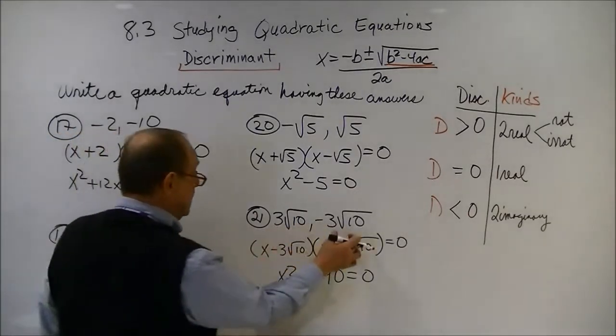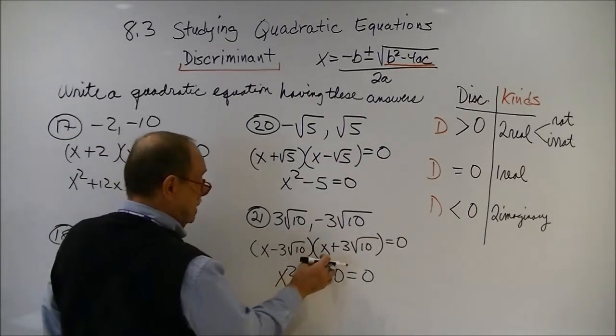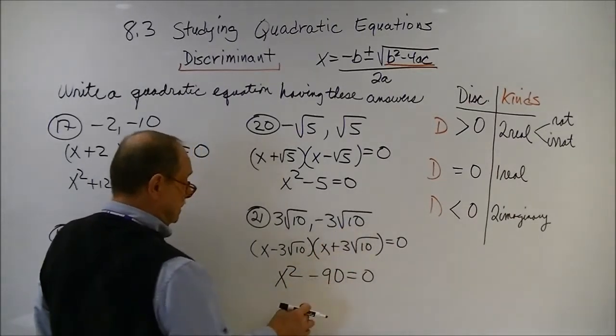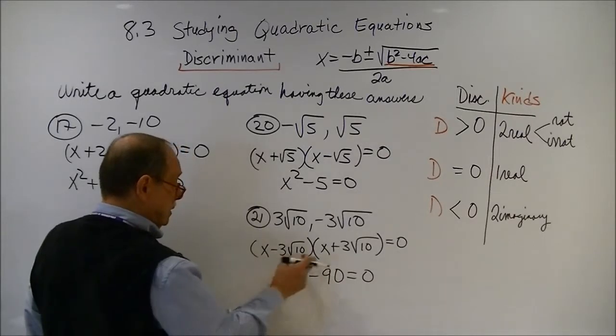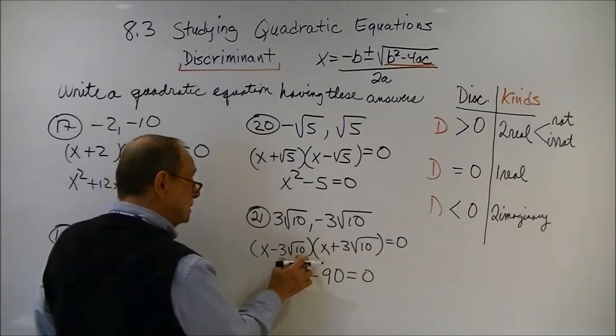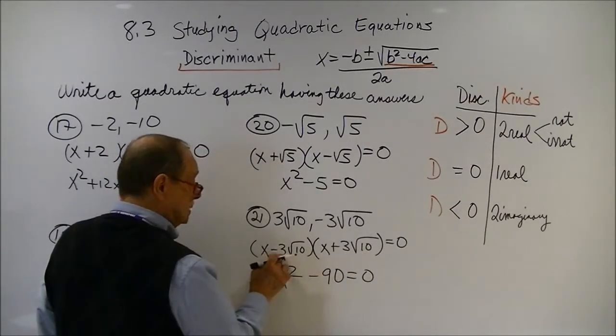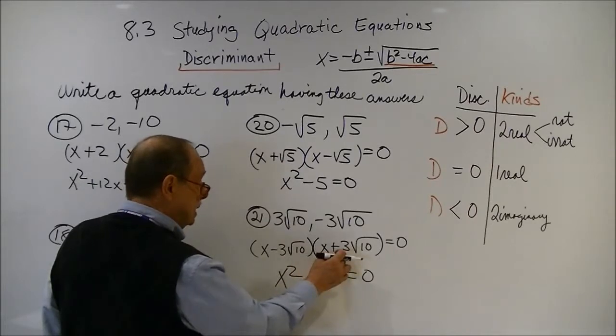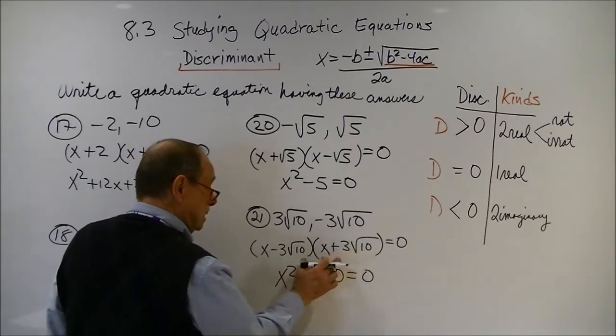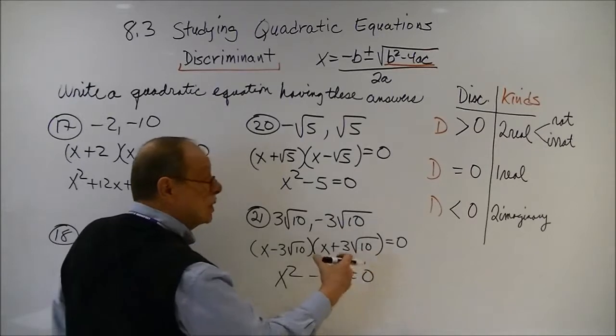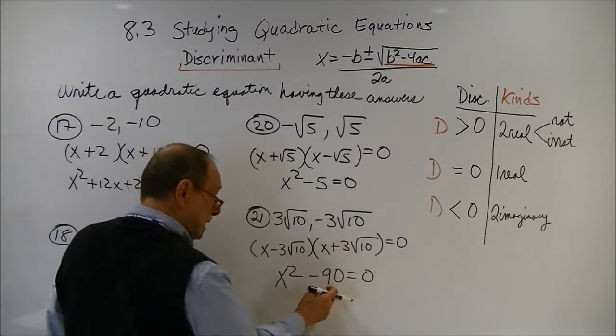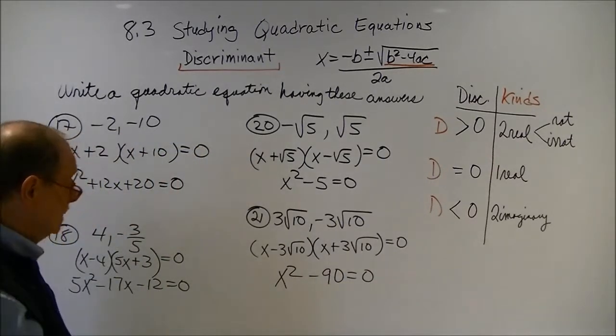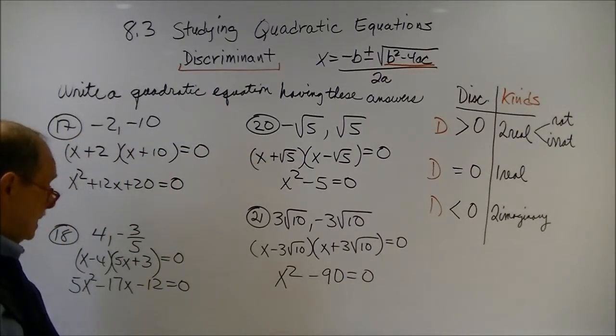And this one, the same way. x minus this. x plus this. And these are conjugates, so there's no middle term. We square our first, get x squared. And now we're going to multiply this times this. Well, this will give us a positive, I'm sorry, a negative 9, square root of 100. Square root of 100 is 10. So, negative 9 times 10 is a negative 90.